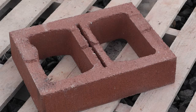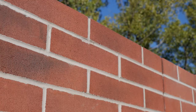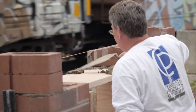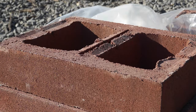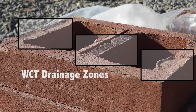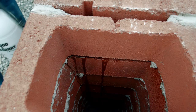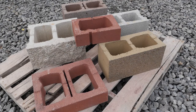We're building this single-width wall using spec brick WCT units from the Concrete Products Group. Spec brick will give us the look of brick, but with the economy of single-width construction. WCT, or Water Control Technology, offers some enhanced moisture control features. It's available on all types of concrete masonry units, including spec brick.